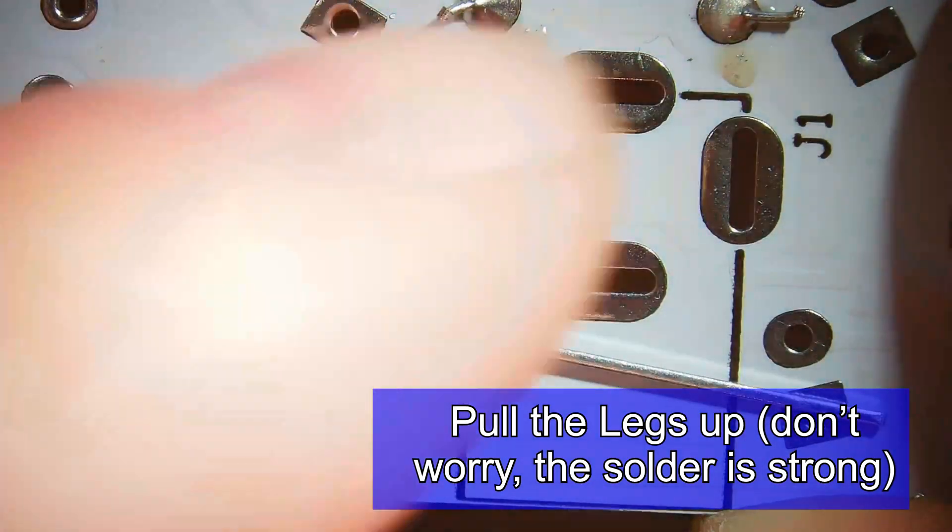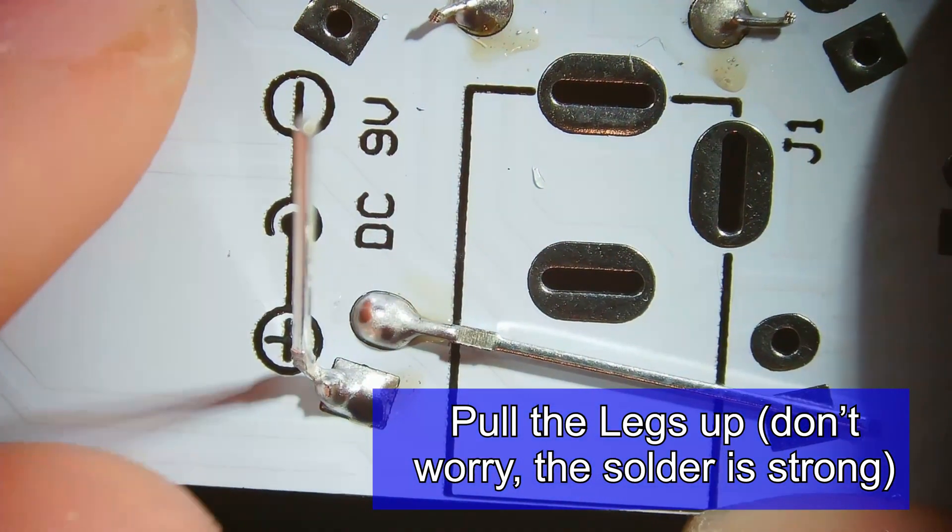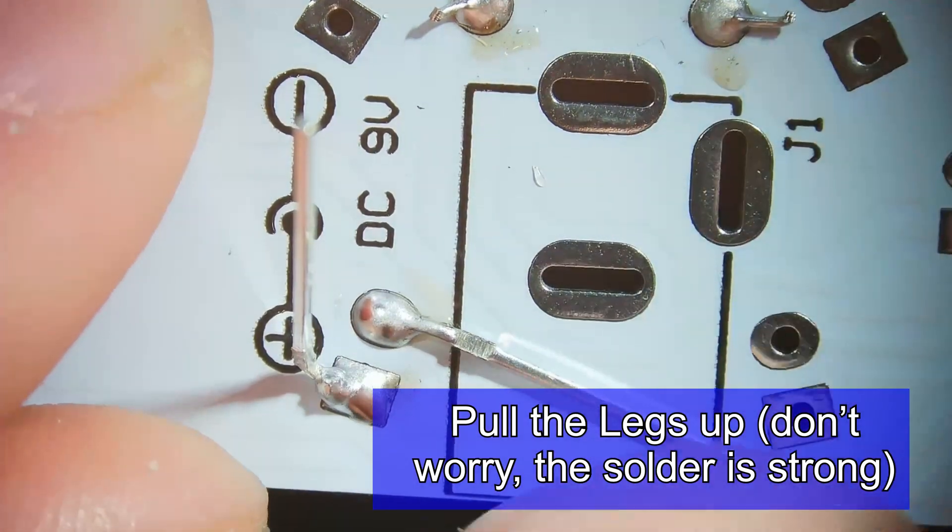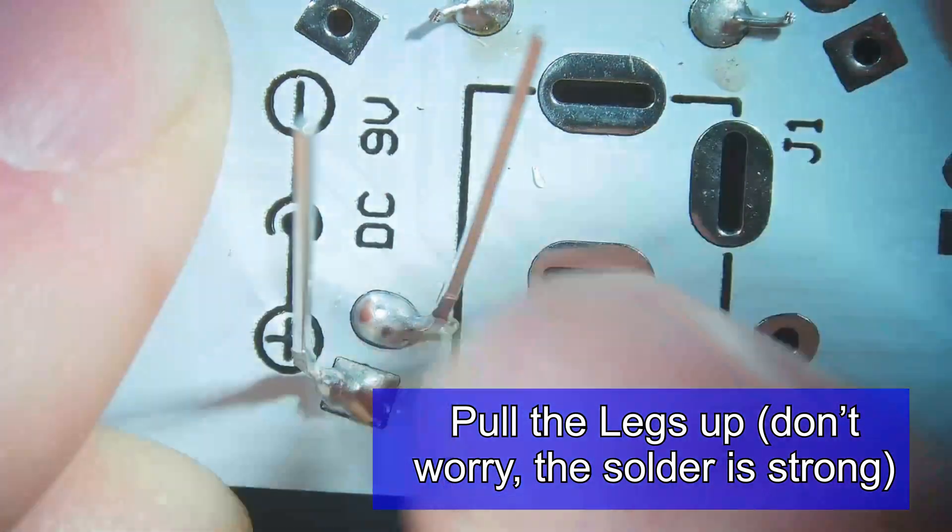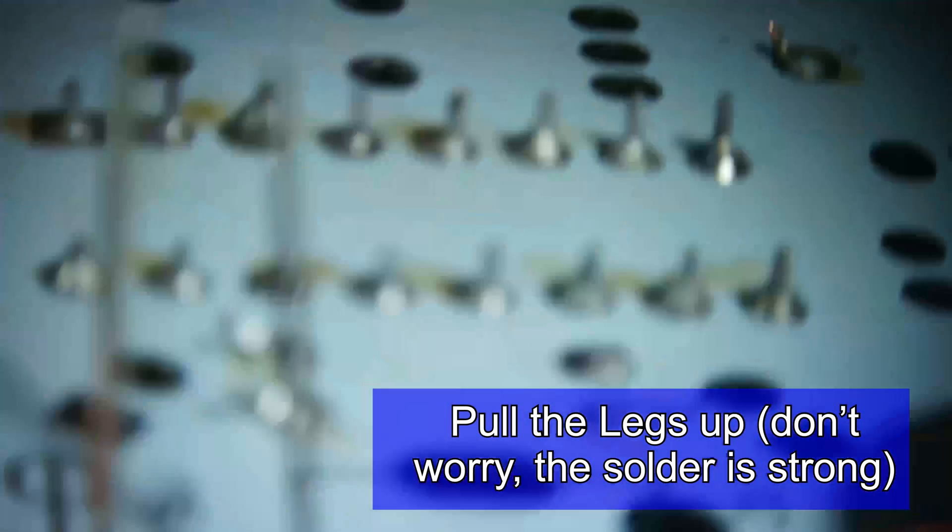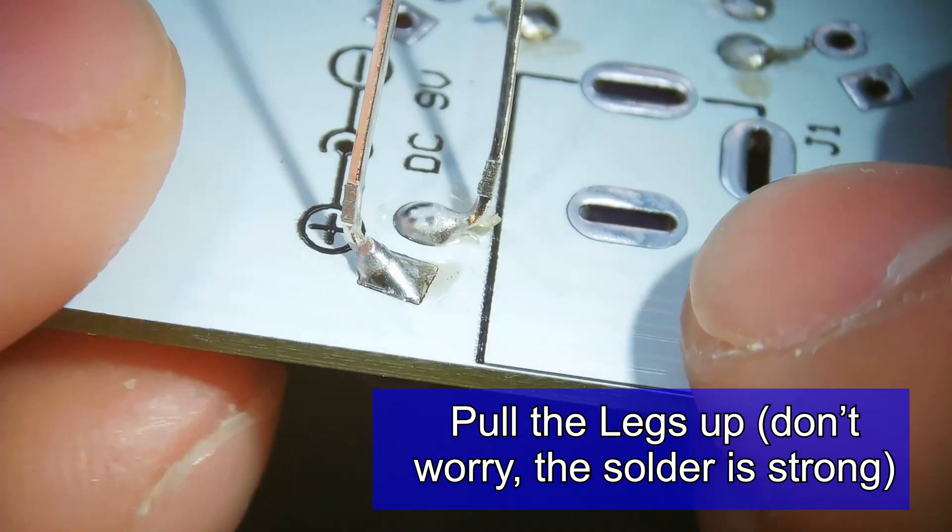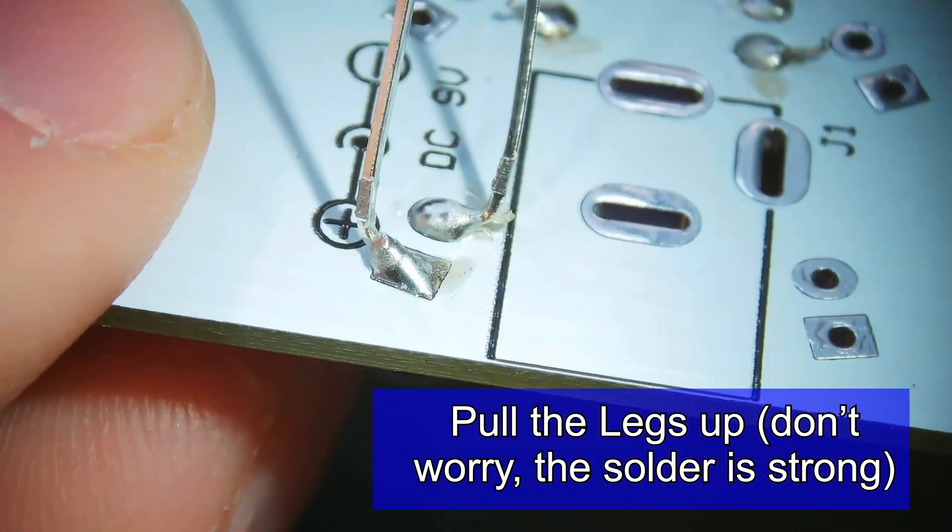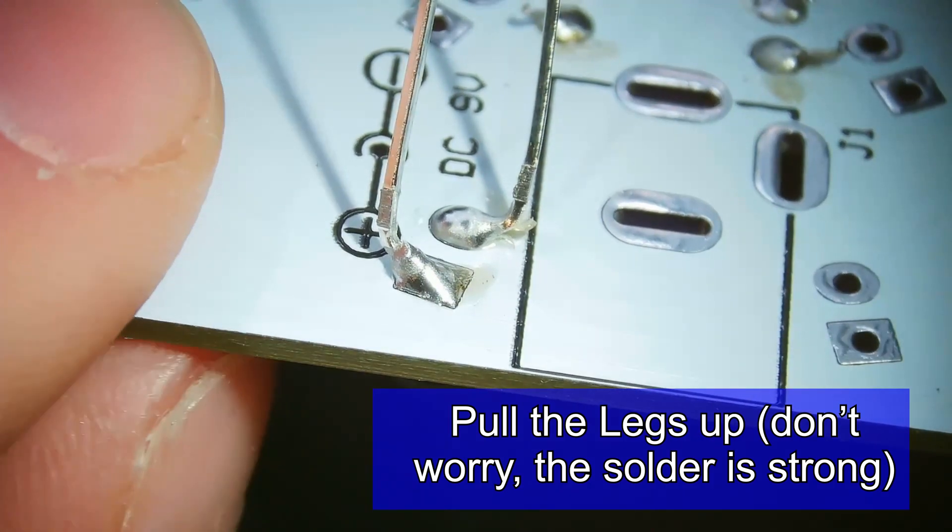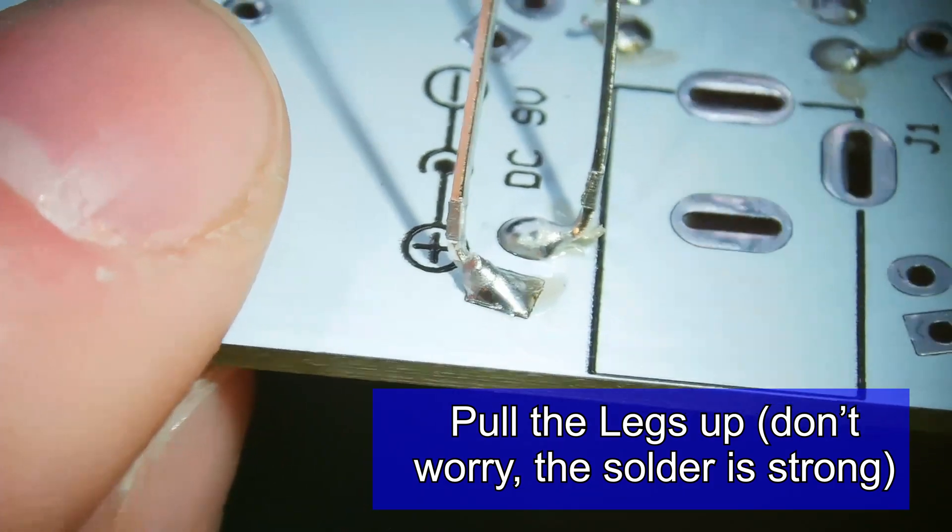Now we're going to pull the legs up. Like I said, don't worry—the solder is nice and strong, so don't worry about breaking it. We'll get these standing straight up, then we're going to flip it on our side just so you can see it, and we're going to grab our tool to cut the legs off.